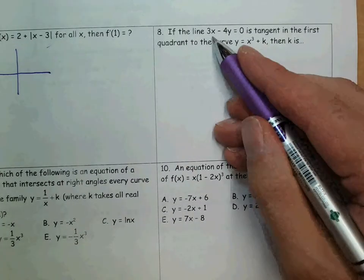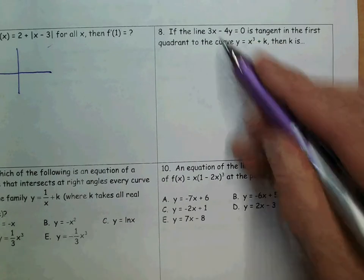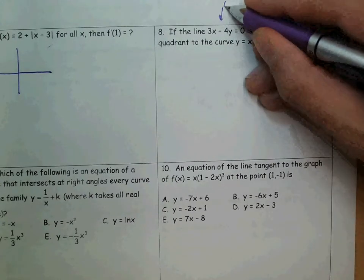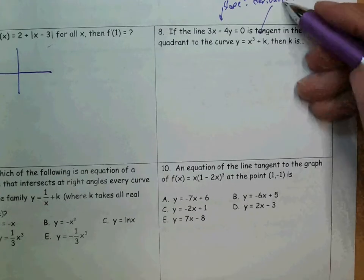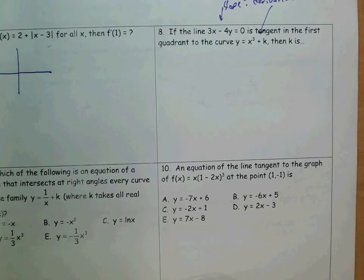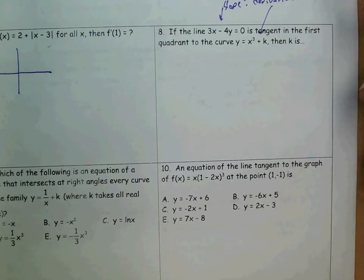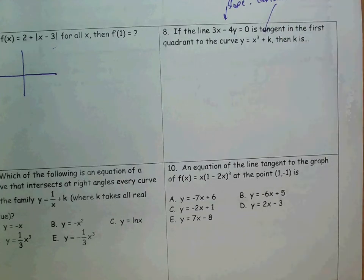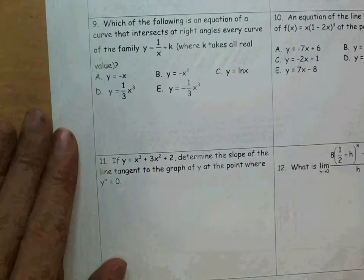On number 8, 3x minus 4y is tangent to this curve, and it asks you what k is. The first thing you should recognize is the connection between a tangent line and a function. The slope of the tangent line equals the derivative of the function. The other thing that has to be true is that at the point where the derivative equals the slope of the tangent line, the two functions share a point. So when you find the slope of the tangent line, you'll also need that they share a point somewhere.